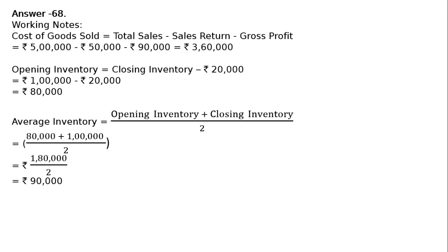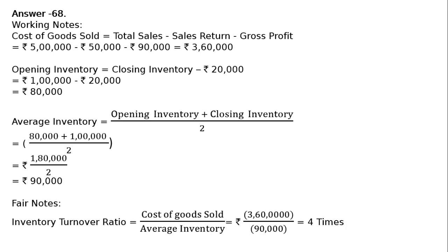Rs. 90,000 is average inventory. Now we have to find out the inventory turnover ratio, which is equal to cost of goods sold — you can say cost of revenue from operations — upon average inventory. That is equal to Rs. 3 lakhs 60,000 divided by 90,000, which is equal to 4 times. This is the final answer.